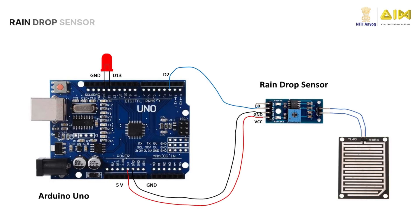Here is how you connect the raindrop sensor to an Arduino board. Connect the VCC and ground pins of the sensor interfacing module to the 5 volts and ground pins on Arduino. Connect the signal pins of the sensor interfacing module to one of the data pins on Arduino, say D2. Finally, connect the LED between pin D13 and the ground pin on the Arduino board.